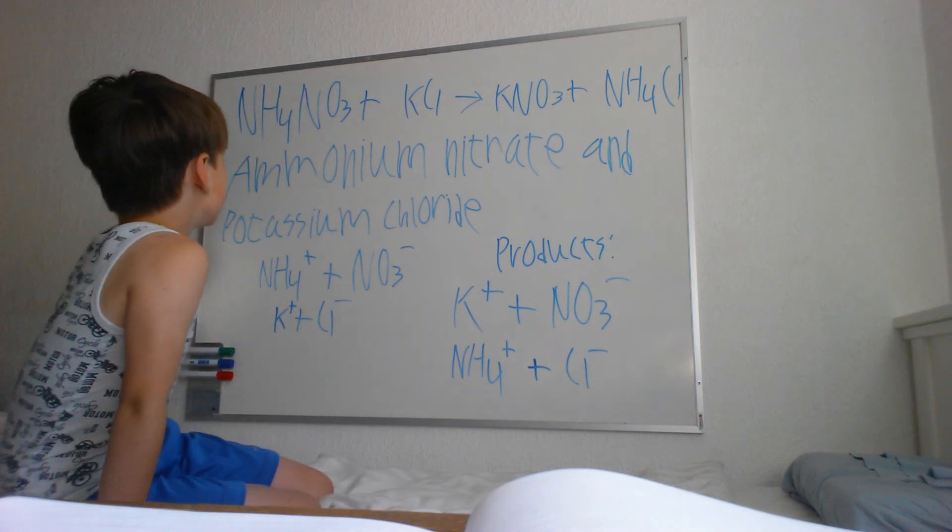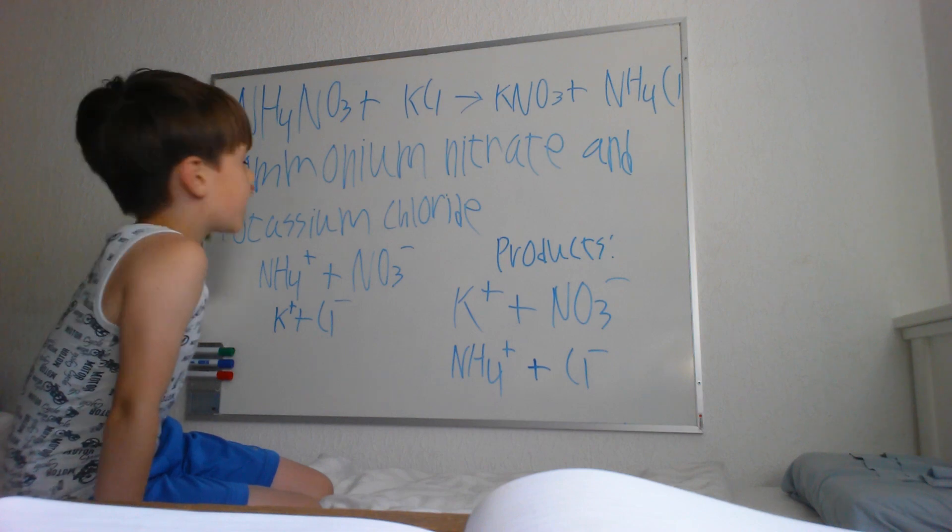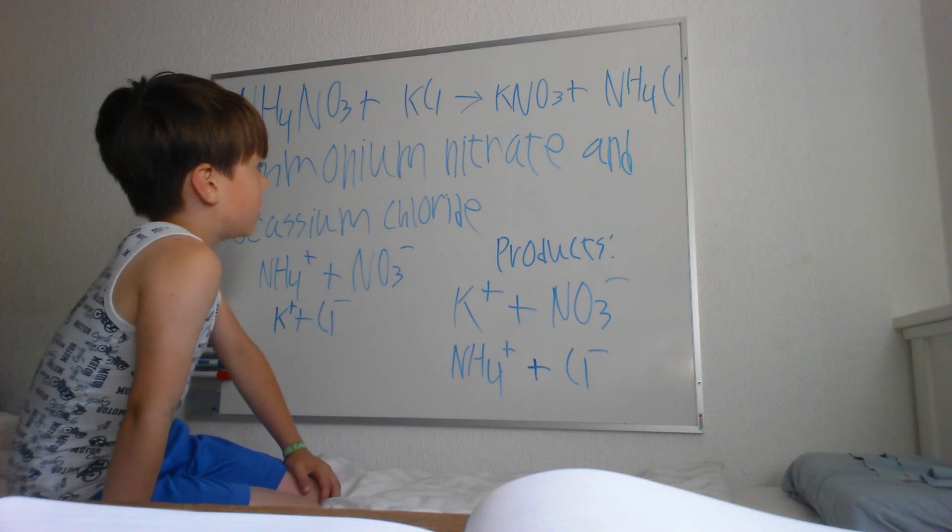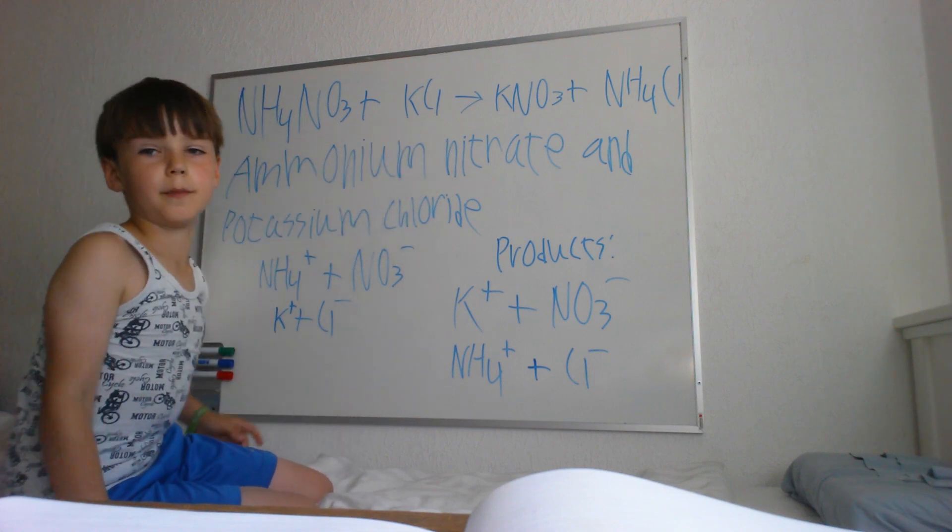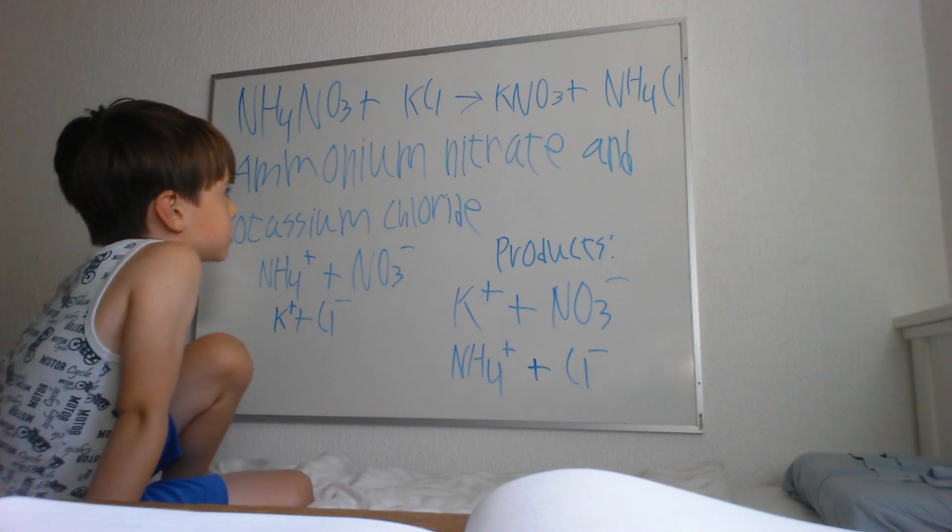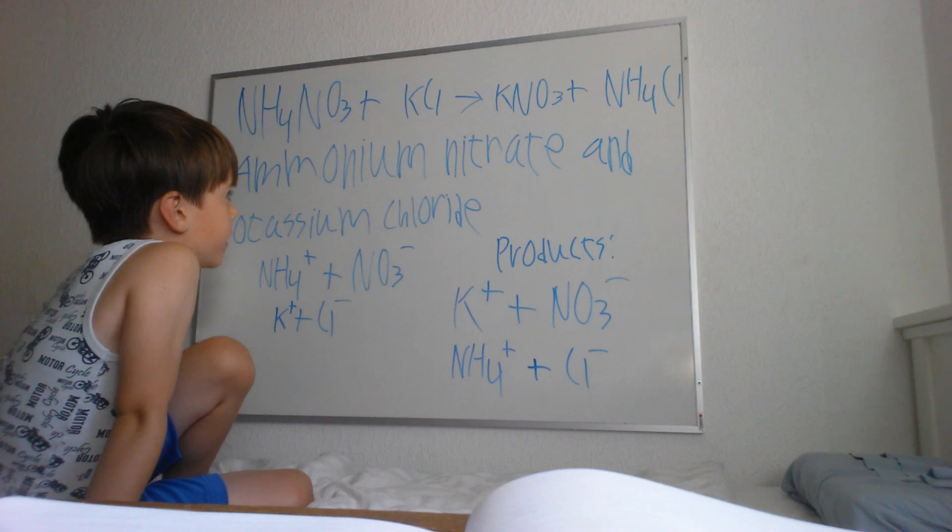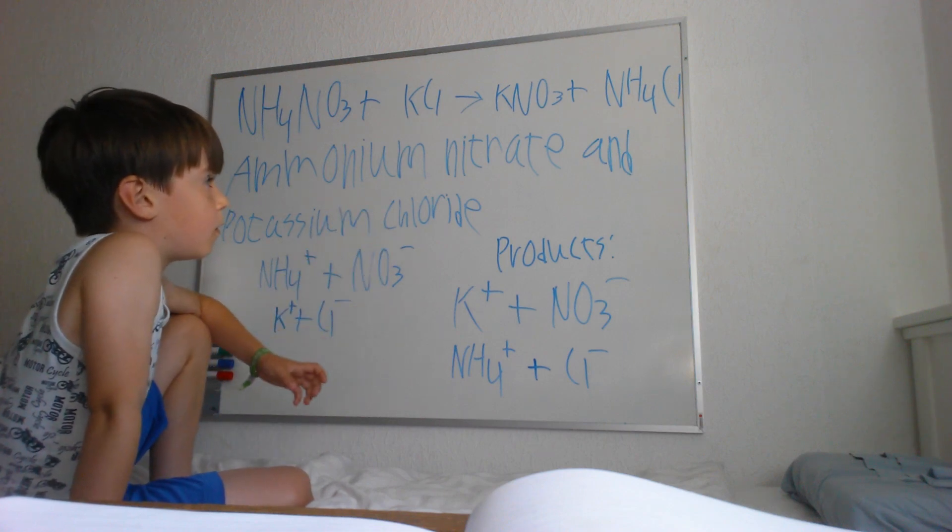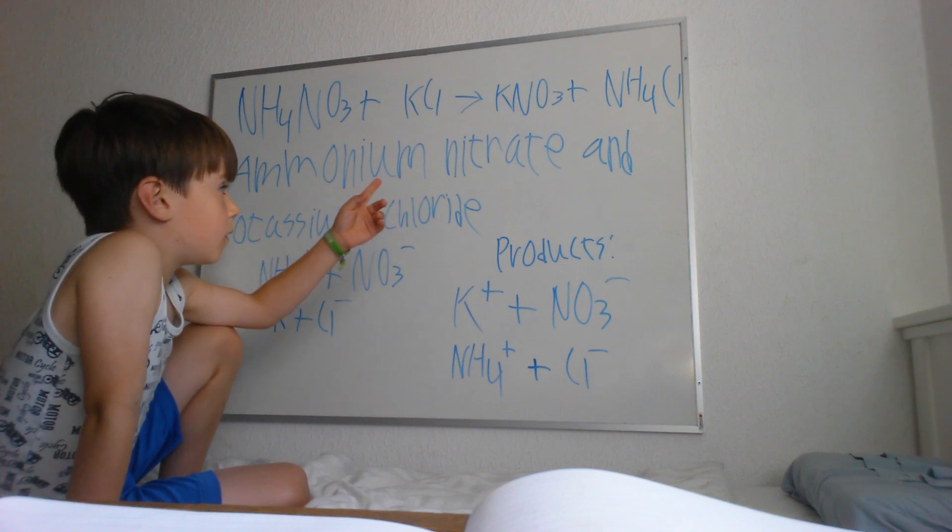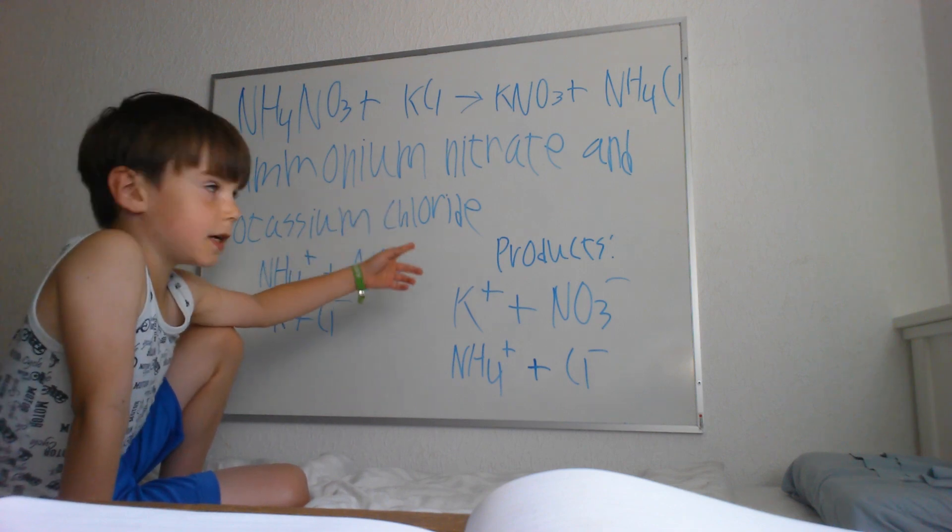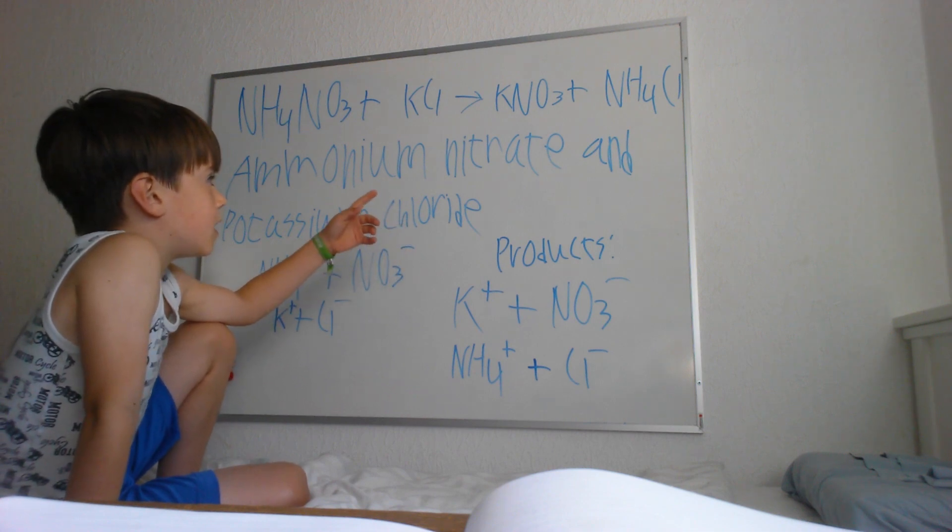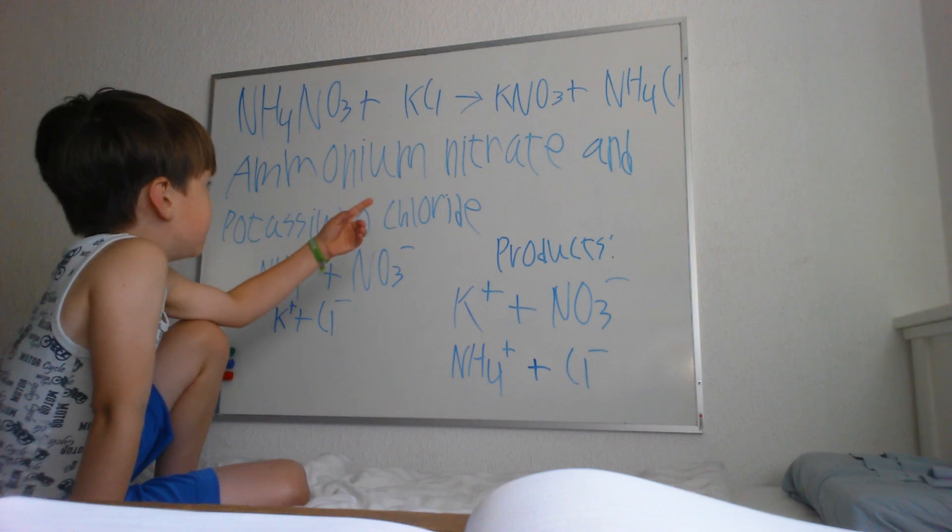What I thought about when making potassium nitrate was that I needed some chemicals that could form together, that could change together. Basically, what I mean is a chemical that has nitrate in it and another chemical that has potassium in it.